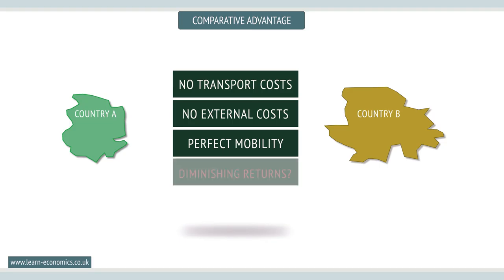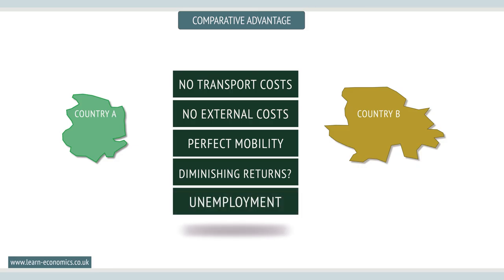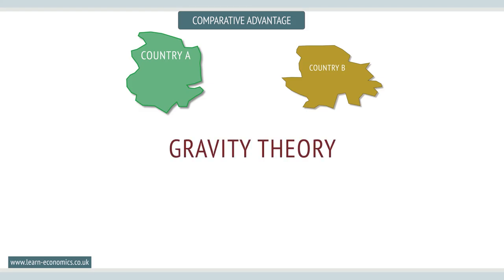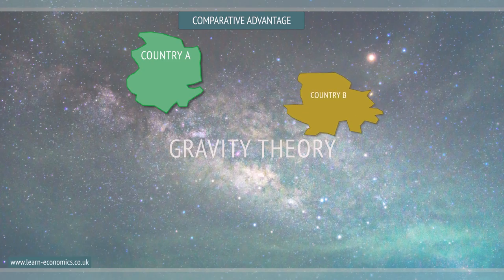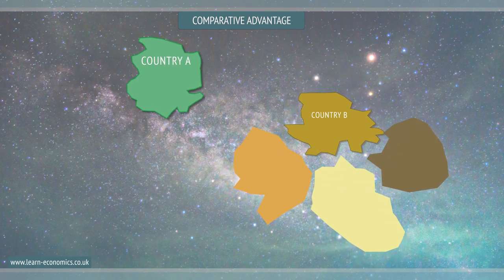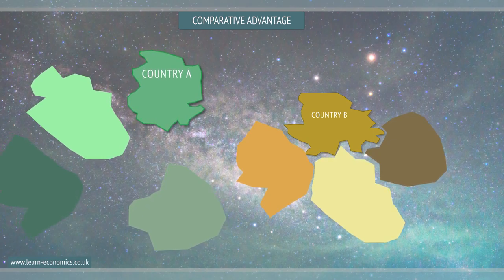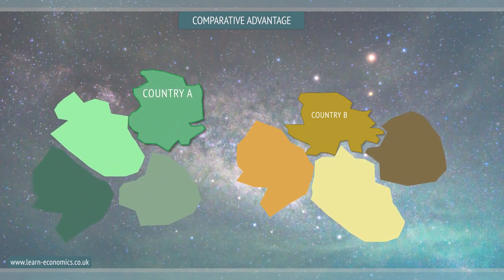Specialization might create structural unemployment as some workers cannot transfer between sectors. Finally, modern trade theories, such as gravity theory, explain trade patterns more in terms of similarities between countries rather than differences, with countries trading most with those they are attracted to in terms of similar size, levels of development, and cultural and economic proximity.